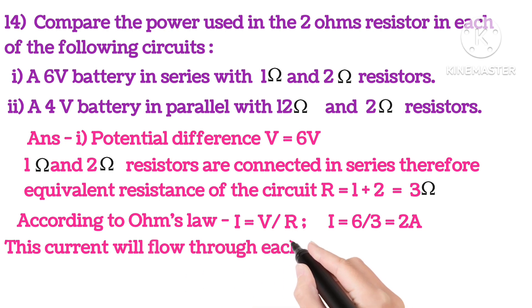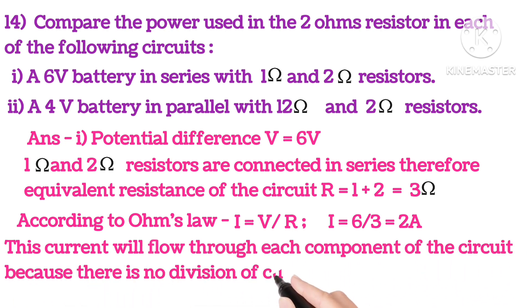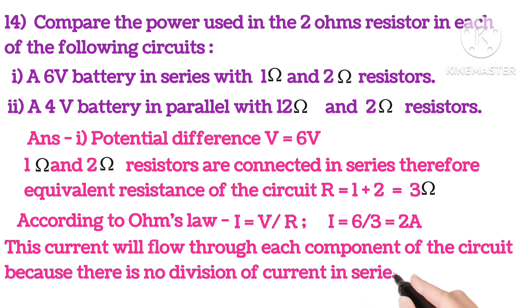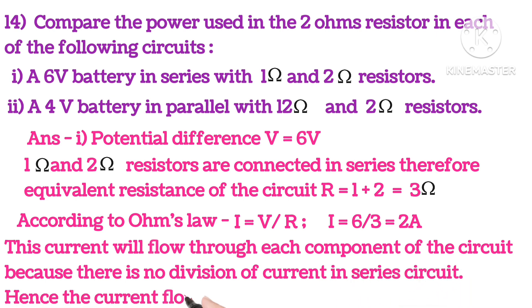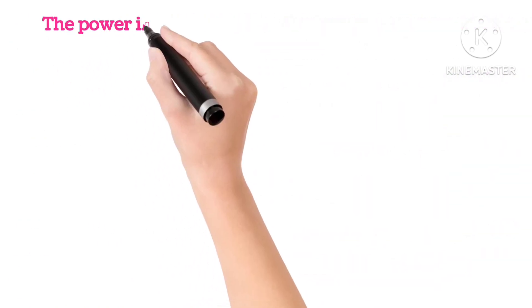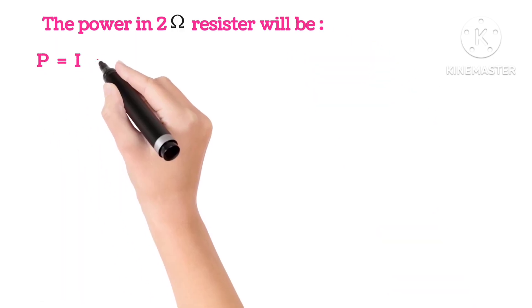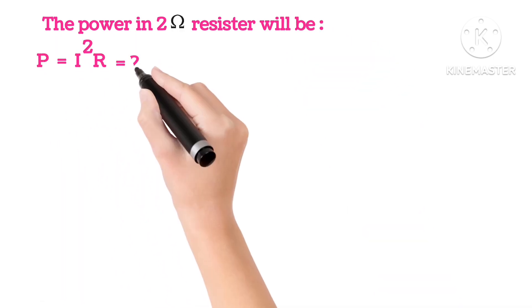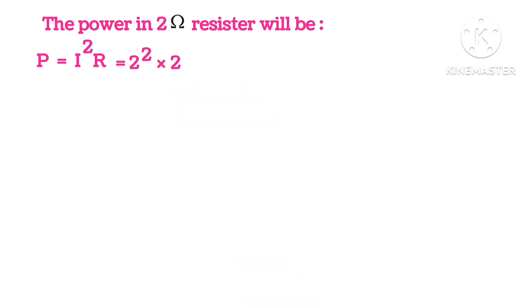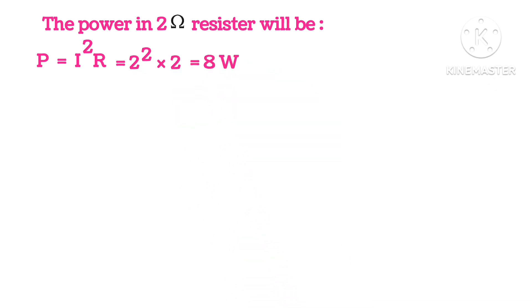This current will flow through each component of the circuit because there is no division of current in series circuit. Hence, the current flowing through 2 ohms resistor is 2A. The power in 2 ohms resistor will be P equals I squared R. Putting in the values, we get power 8 watts.